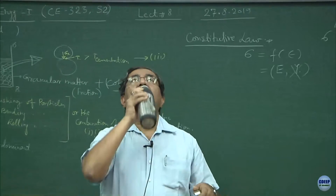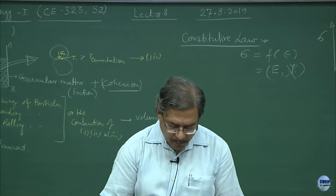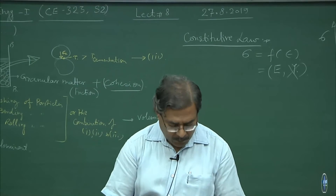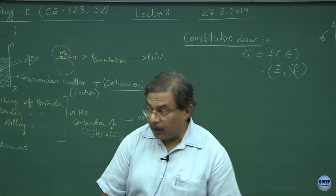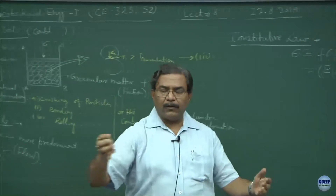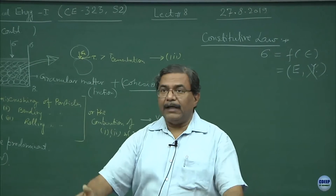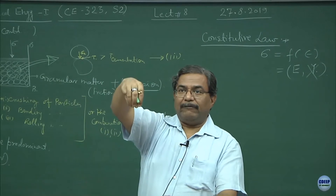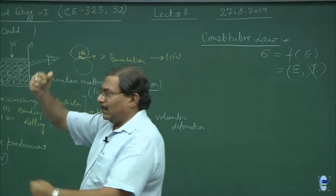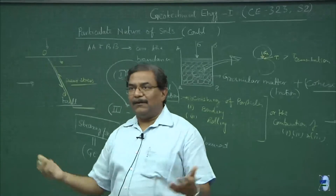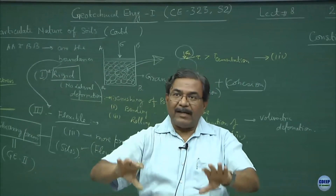A student asks: you said the flexible boundary system has predominant rolling of particles, but how do we call it flexible if it is rolling? The answer is: the boundaries are flexible. Imagine when you go to villages — people take a container, pour wheat or similar material, and use a wooden tamp to densify it. If the boundaries of that container were made of rubber or thin plastic, what would happen? The moment you tamp from the top, it would deflect in the lateral direction.